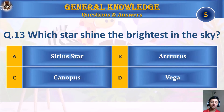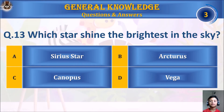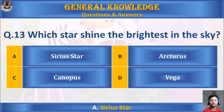Question 13: Which star shines the brightest in the sky? A. Sirius, B. Arcturus, C. Canopus, or D. Vega. Your time starts. The answer is A. Sirius.